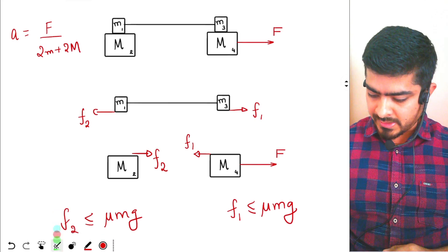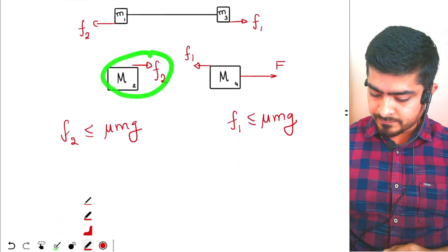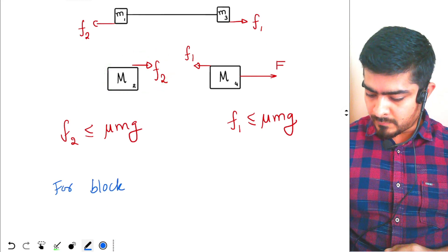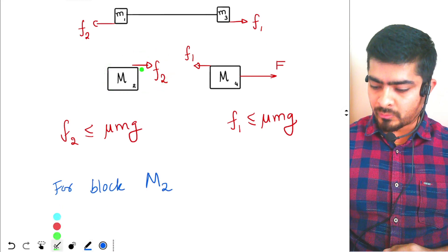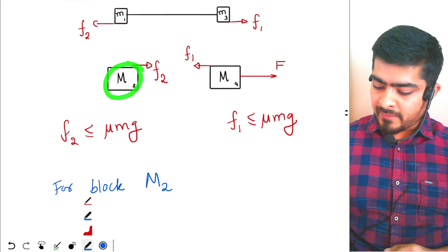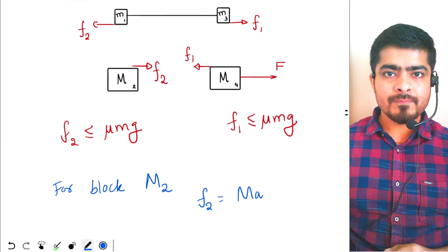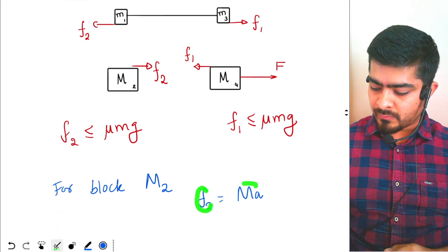Let's write the equation for this block M2. So for block M2, this block right, FBD will be what? F2 is equal to MA, correct. F2 is equal to MA.